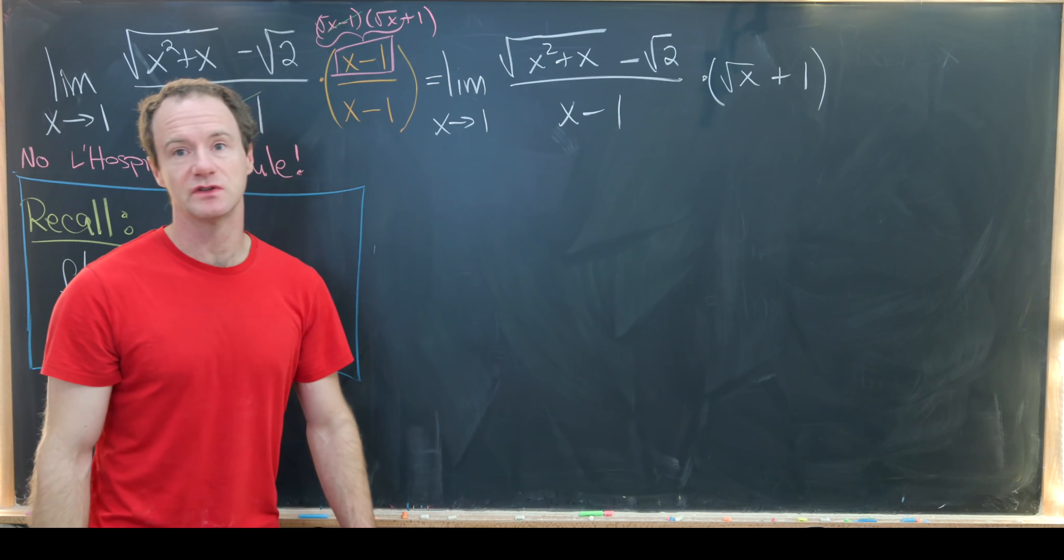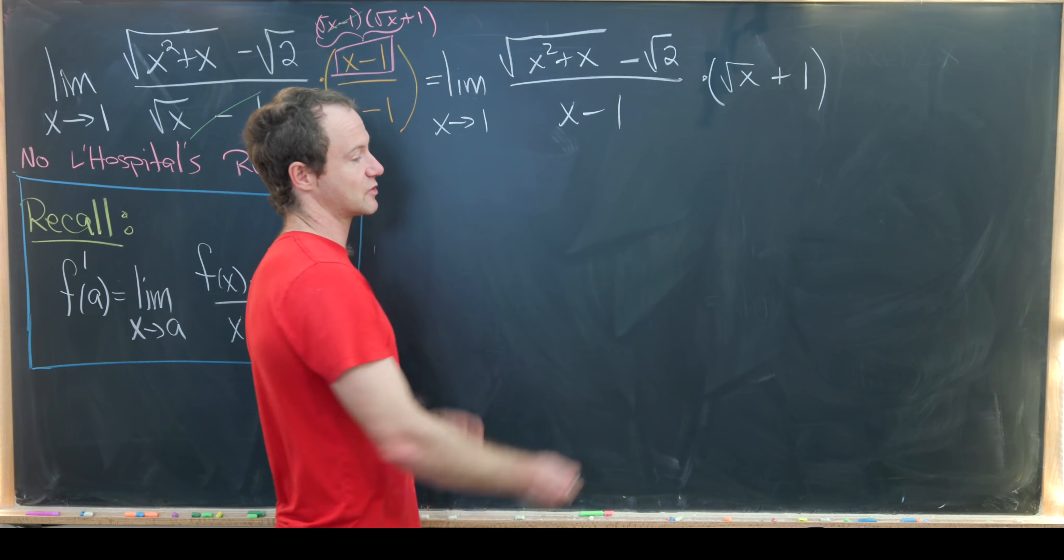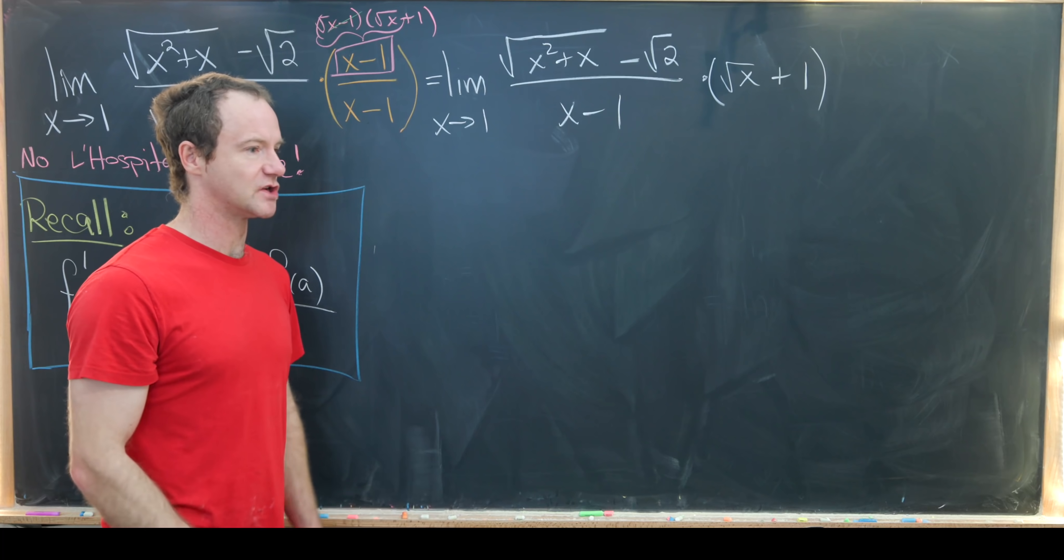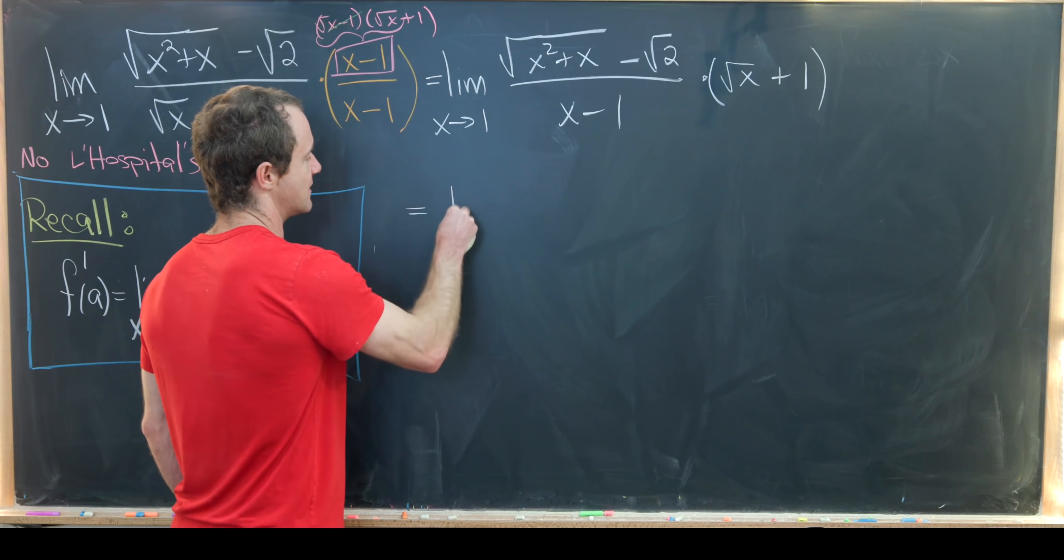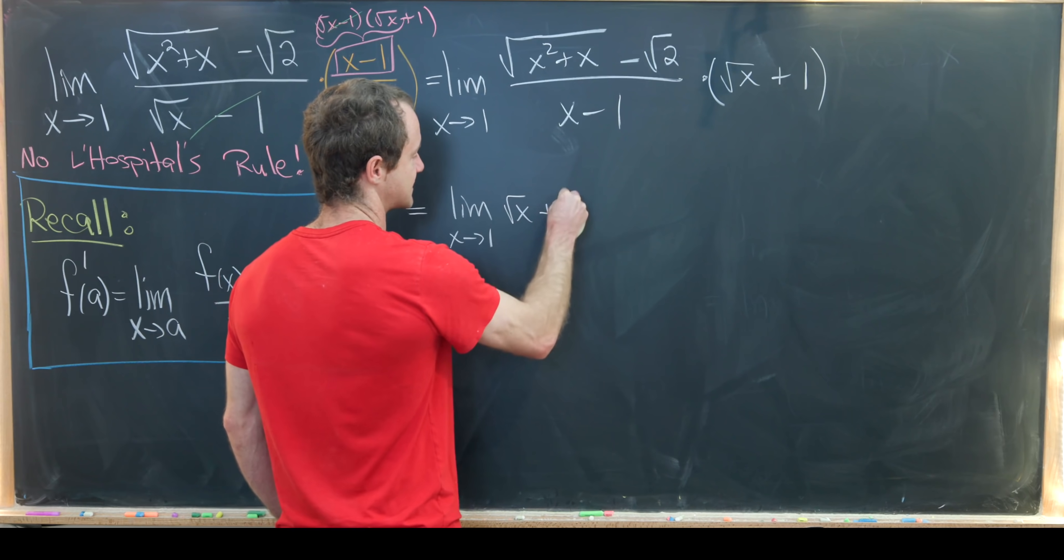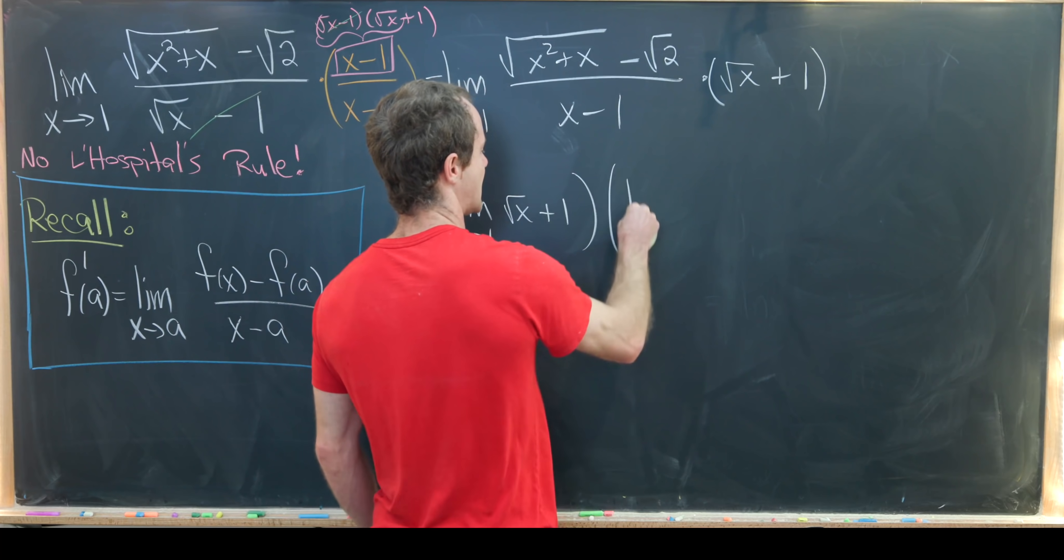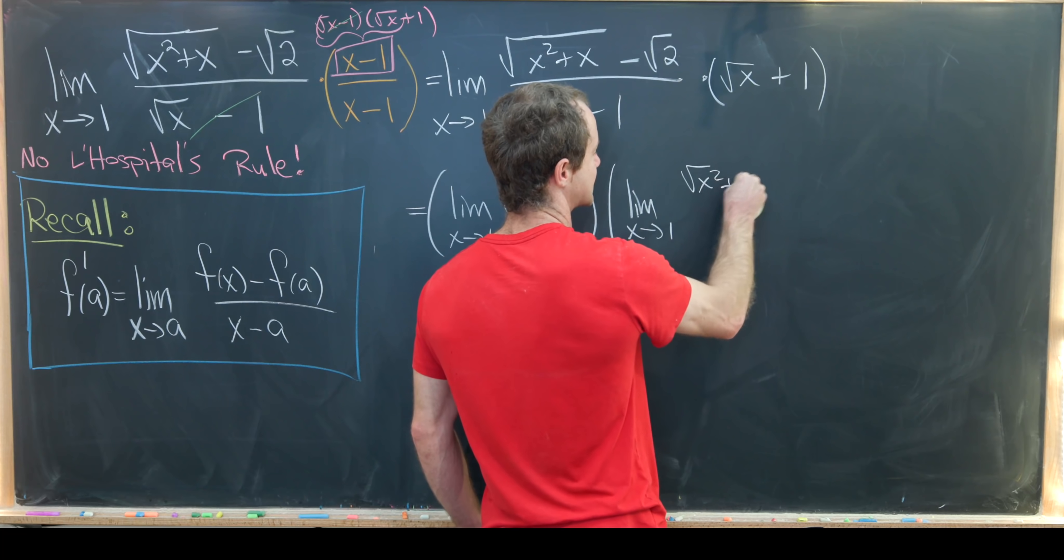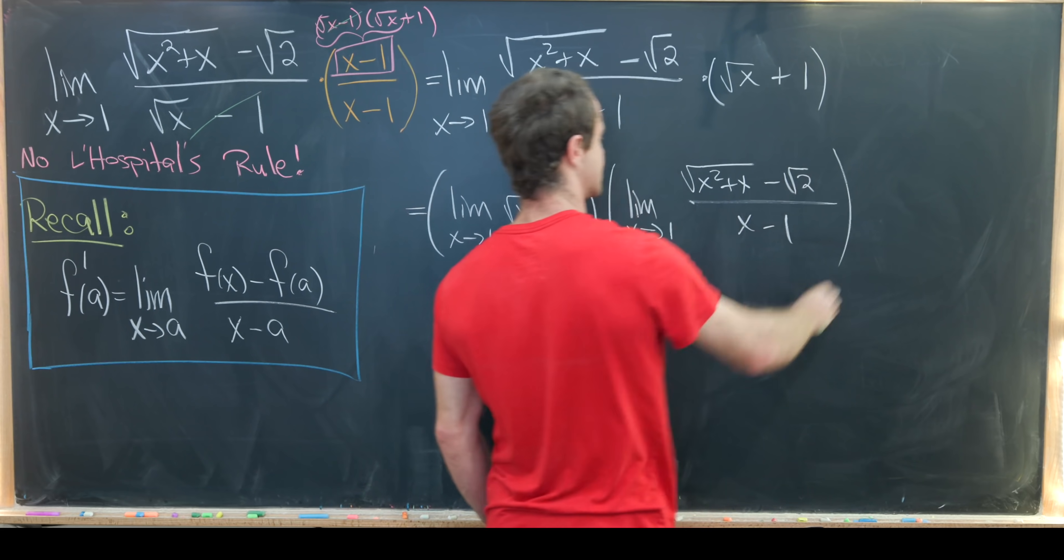And now we're going to split this into two limits, which might seem like a little bit of a cheat. But each of the limits that we're splitting it into exists and is finite. And there's a standard result that says you can split things up like this. So that's going to leave us with the limit as x goes to 1 of the square root of x plus 1, and then we have the limit as x goes to 1 of the square root of x squared plus x minus the square root of 2 over x minus 1.